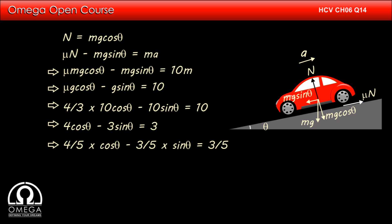We know that 4 by 5 is equal to sin 53 degree, 3 by 5 is equal to cos 53 degree and 3 by 5 is also sin 37 degrees. Putting the values, we get sin 53 degree into cos theta minus cos 53 degree into sin theta is equal to sin 37 degree.